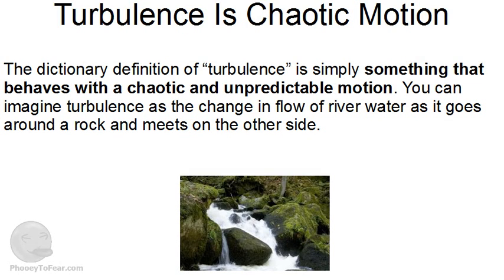So what is turbulence? Turbulence is basically something that behaves with a chaotic and unpredictable motion. You can imagine turbulence as the change in the flow of a river as it goes around a rock and meets on the other side. The water would roil with eddies and vortices, having a turbulent and chaotic character until the turbulence had dissipated and the flow smoothed out again.